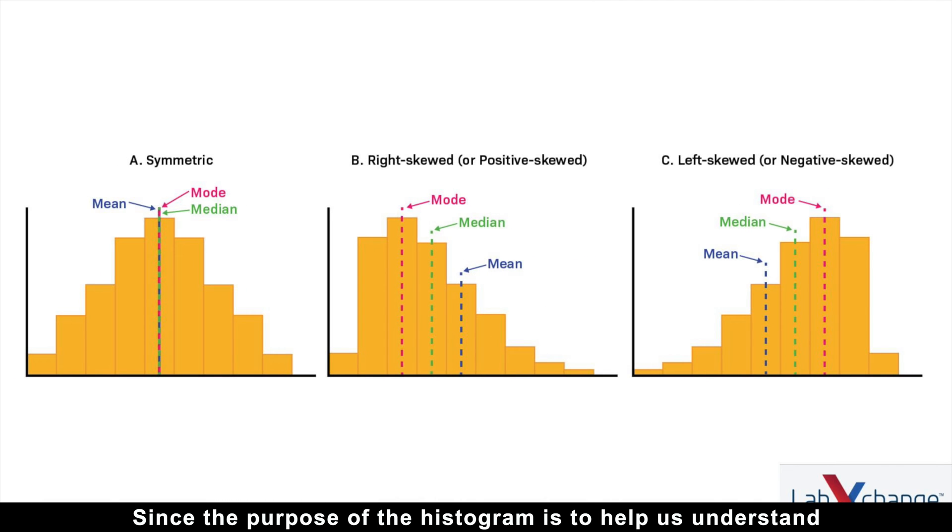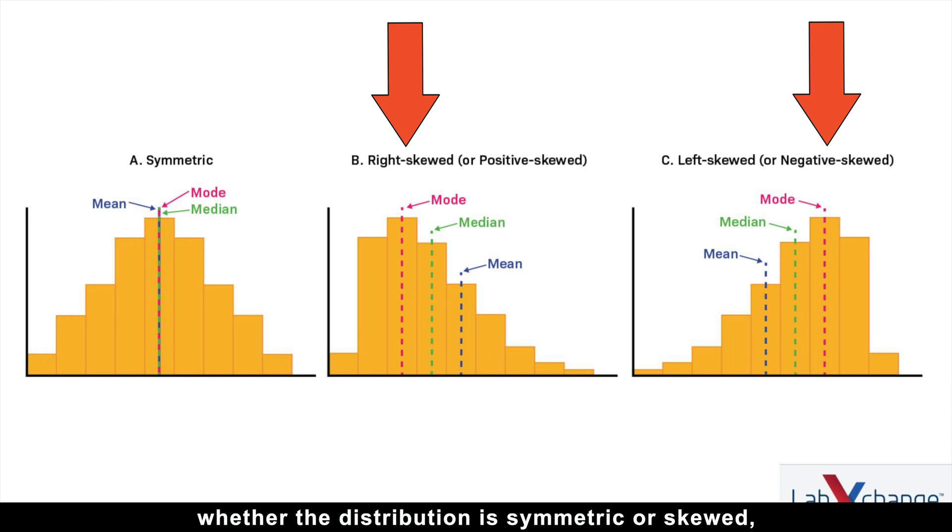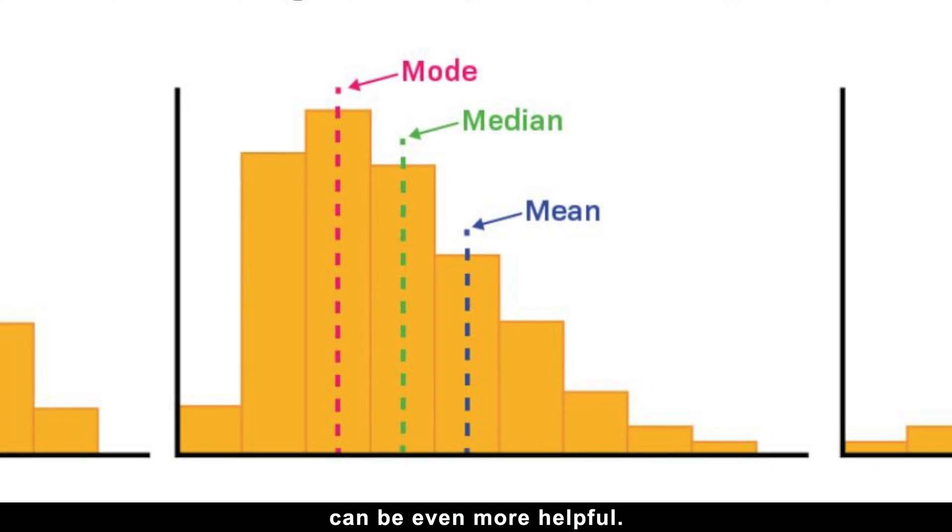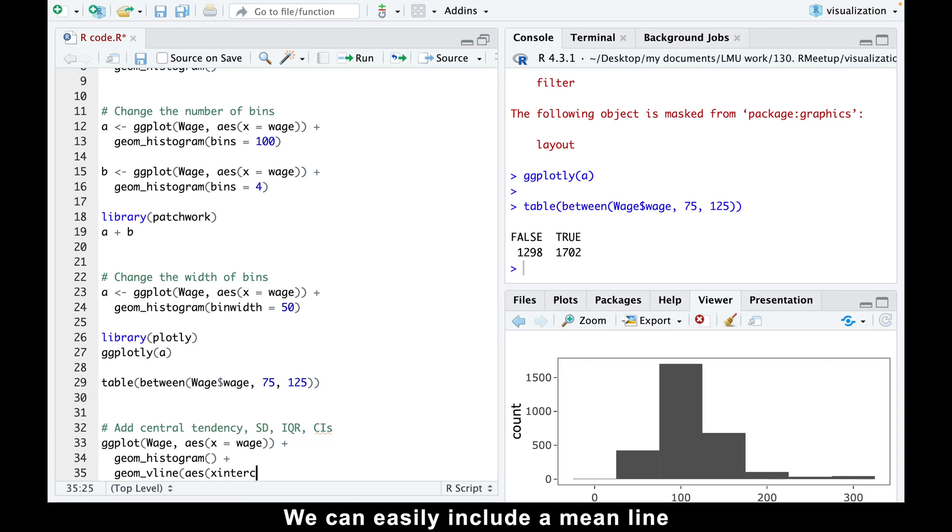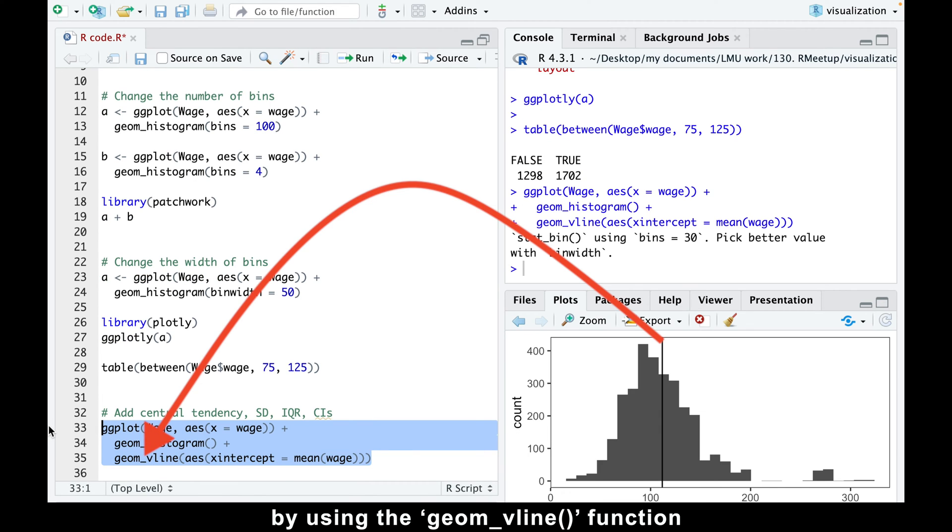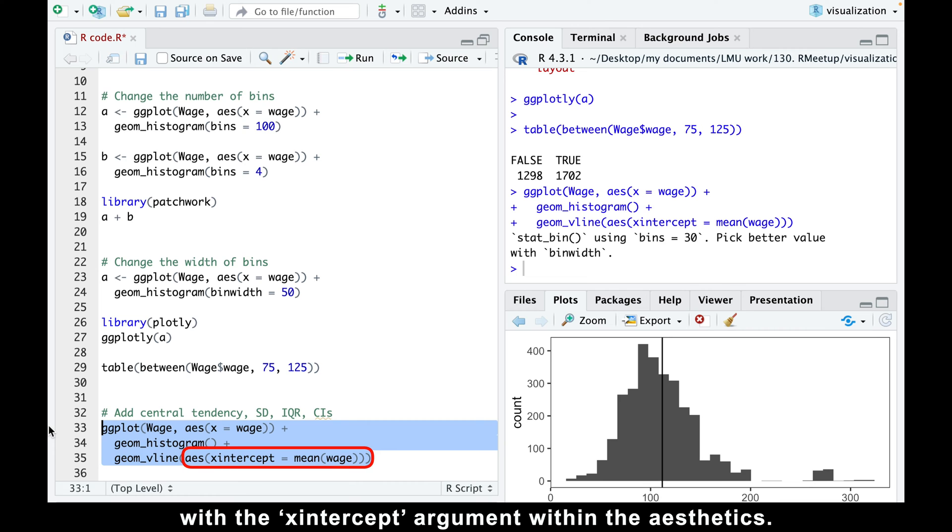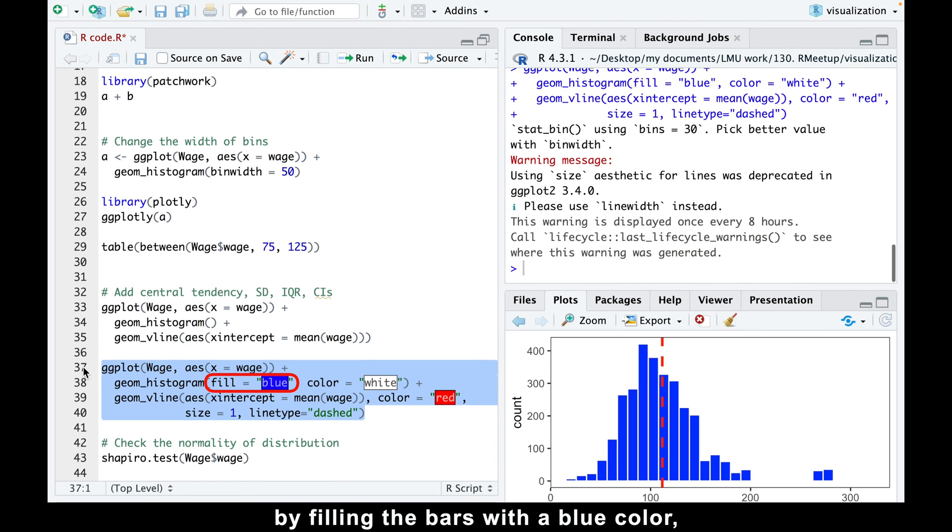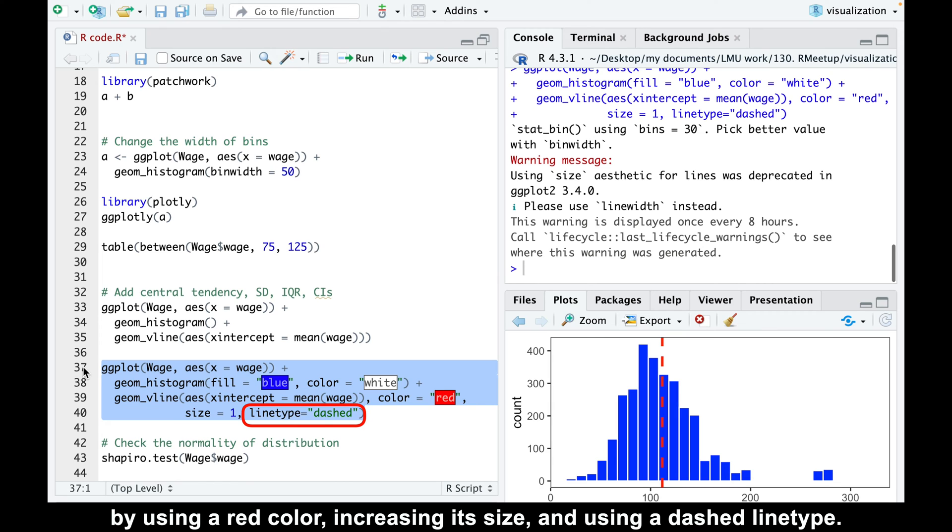Since the purpose of the histogram is to help us understand whether the distribution is symmetric or skewed, adding central tendency lines such as the mean or median can be even more helpful. We can easily include a mean line by using the geom_vline function with the x-intercept argument within the aesthetics. We can enhance the visual appeal of this plot by filling the bars with a blue color, outlining the bars in white, and making the line more prominent by using a red color, increasing its size, and using a dashed line type.